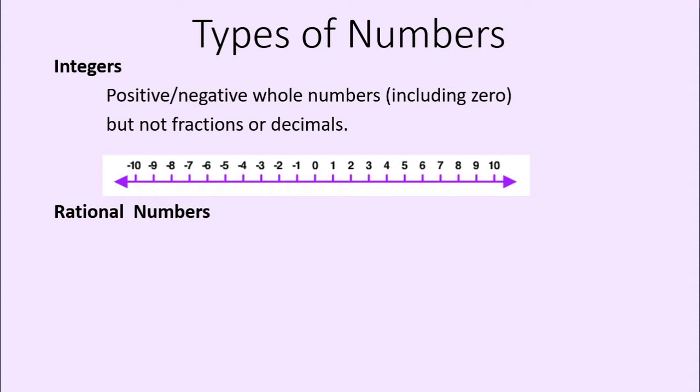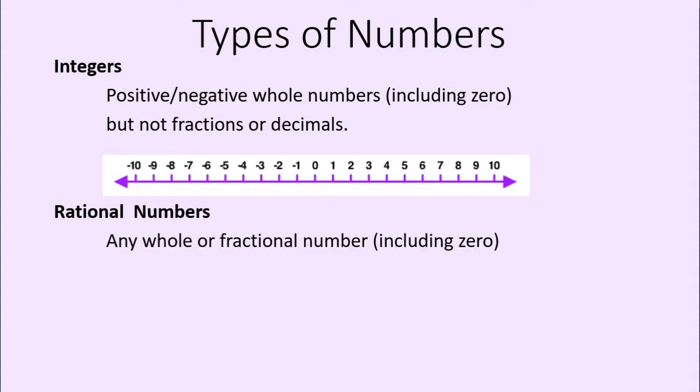Rational numbers, on the other hand, are any whole or fractional number, including zero. So that's all possible values, really.